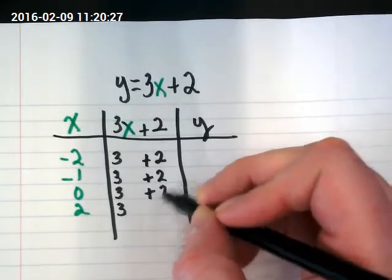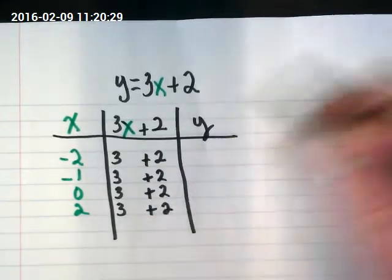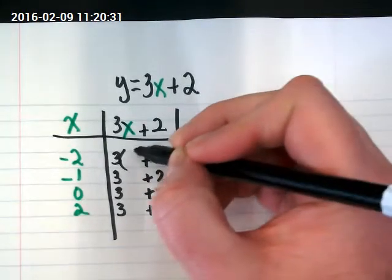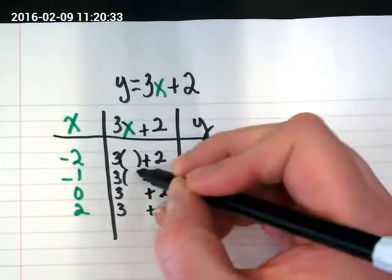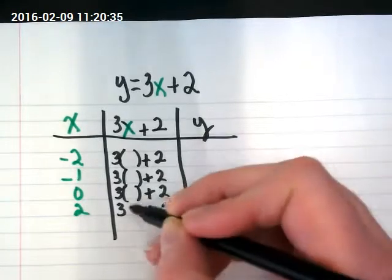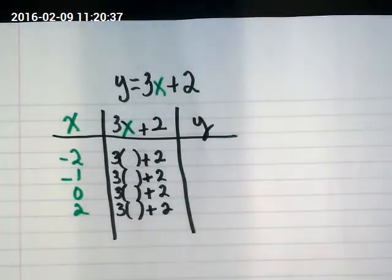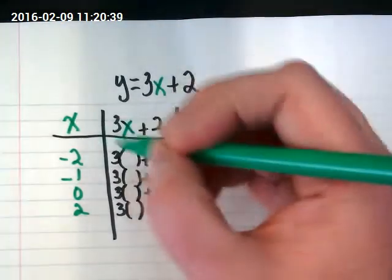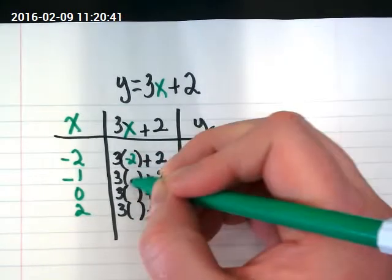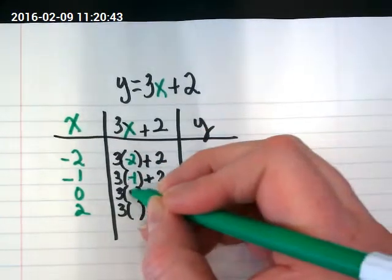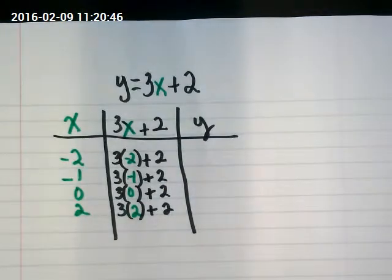And so our goal is to plug different numbers in for x and see what happens. But the rest of our rule stays the same. And because 3x means I'm multiplying by x, I'm going to put parentheses here. And then I'm going to plug the number in that I'm trying for x.